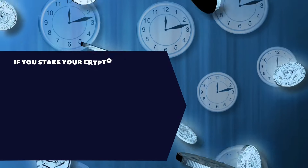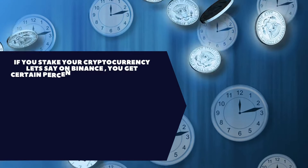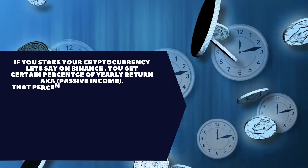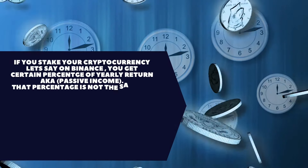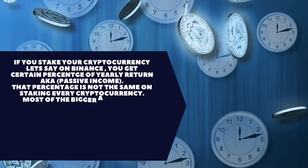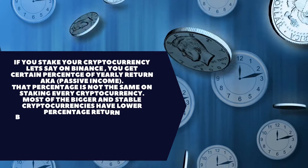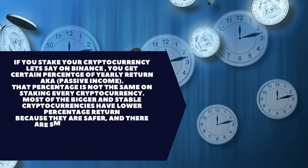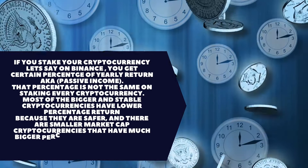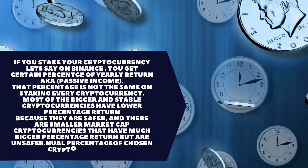If you stake your cryptocurrency, let's say on Binance, you get a certain percentage of yearly return known as passive income. That percentage is not the same for every cryptocurrency. Most of the bigger and stable cryptocurrencies have a lower percentage return because they are safer, while smaller market cap cryptocurrencies have a much bigger percentage return but carry bigger risk.